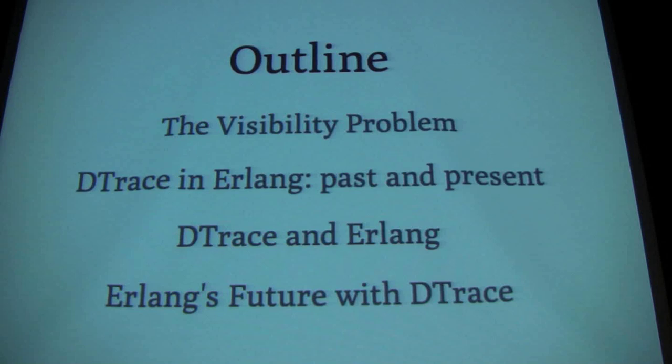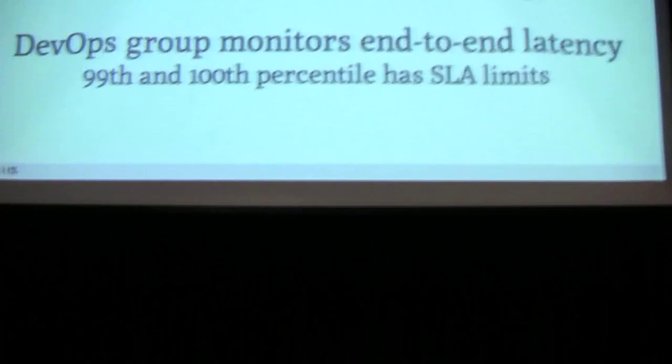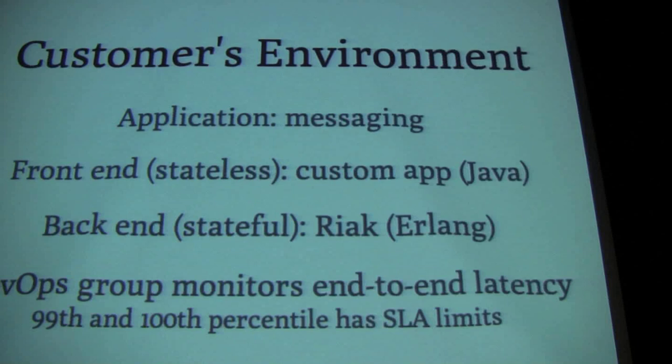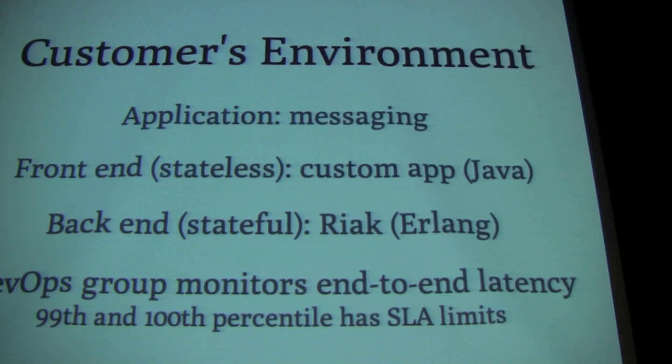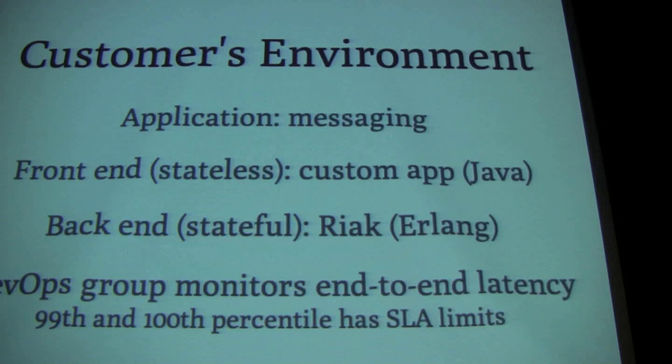The visibility problem with Riak: in this customer case study it's a messaging application. Many thanks to Voxer for allowing us to talk publicly about these things. The front-end application is a custom app in JavaScript and Node.js, and the back end — which is very stateful, unlike the stateless front-end app — is Riak, written in Erlang.